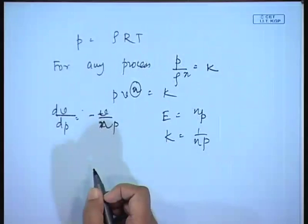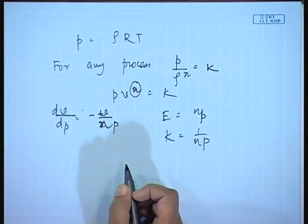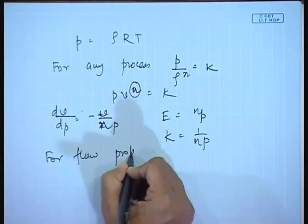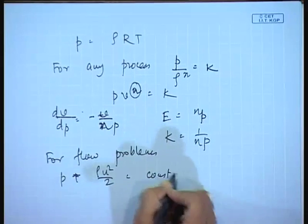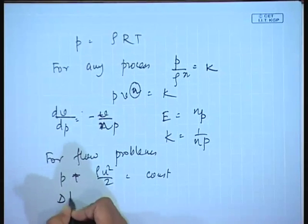Whenever a fluid is at rest, its density or specific volume changes with pressure; we can define it either with bulk modulus of elasticity or with the coefficient of compressibility. Since a change in pressure brings about a change in volume as well as temperature, it has to be the isothermal coefficient of compressibility. Whenever a fluid is moving, we know from Bernoulli's equation that pressure head and velocity head must be conserved: P + ρu²/2 = constant, so ΔP ≈ ρu²/2, which is the dynamic head.